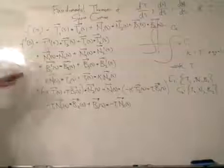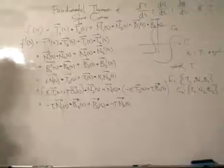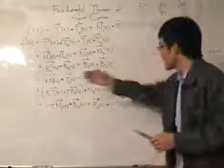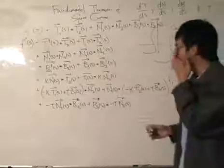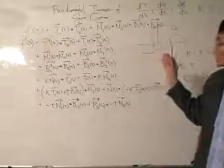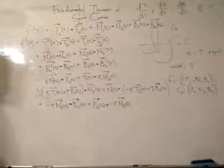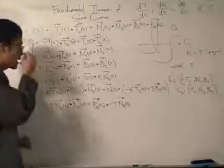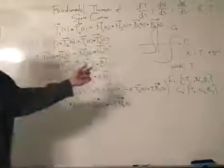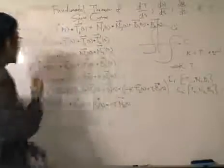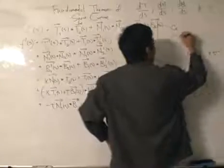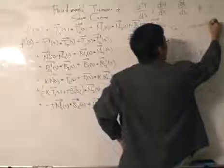Things are looking very messy, but we can anticipate further ahead to match up the ones that are equal — or rather, different by a negative sign — so that they will cancel out each other. For dot products, we can shift the scalar functions to one side. At this point, we're going to assume that the values of kappa and torsion are equal for C1 and C2, because to prove the fundamental theorem, two curves are congruent if kappa and torsion are equal.